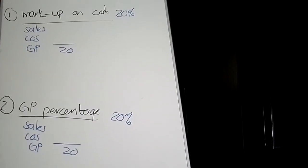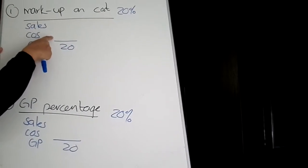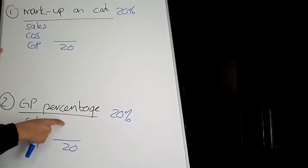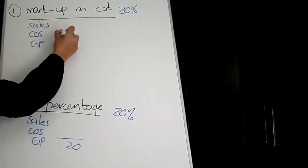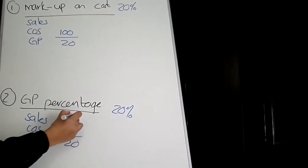The rule that you need to remember is with markup on cost, the cost of sales is always 100%. Whereas with gross profit percentage, the sales is always 100%. So we know that the 100 must go into cost of sales and here the 100 must go into sales.